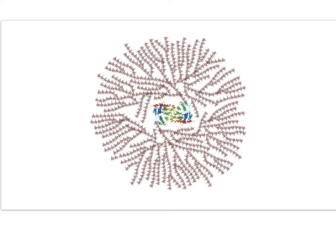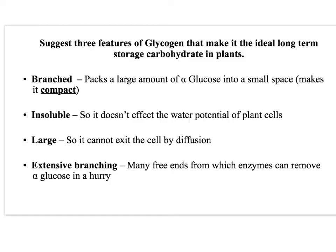Glycogen is highly branched and quite compact — very similar to starch in properties that make it a good storage carbohydrate. It's branched, making it compact, so you can store large amounts of alpha glucose in a small space. It's insoluble, so it doesn't affect the water potential of animal or fungi cells. It's large, so the molecule can't exit the cell by diffusion. The extensive branching means more free ends are available for enzymes to break off alpha glucose molecules by hydrolysis, giving more availability of glucose in a shorter space of time, supporting increased rates of respiration compared to breaking glucose from starch.